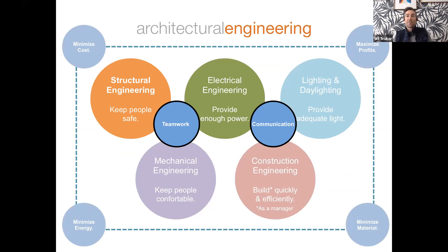When you come into the program, many folks do think that architectural engineering is really niche and really specialized. But in actuality, it is quite broad. So if you're really undecided about what engineering discipline to go into, architectural engineering is actually a good discipline because you're studying different disciplines that have to come together to make a building actually function well.